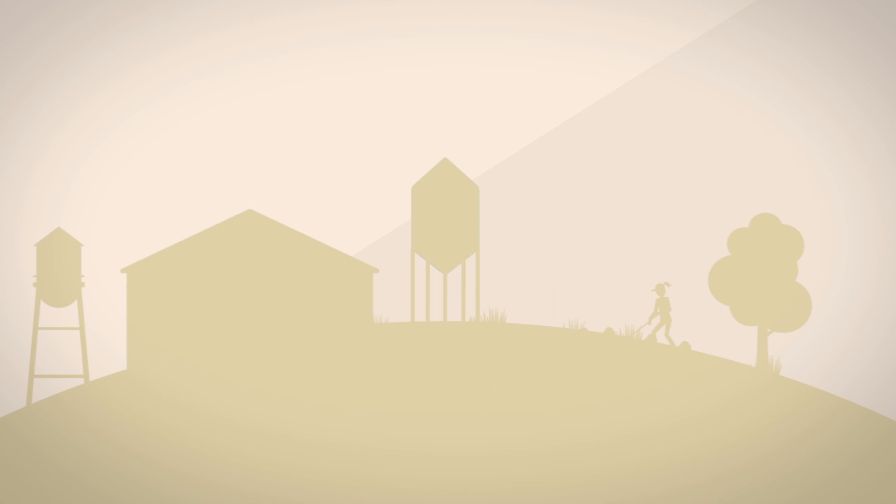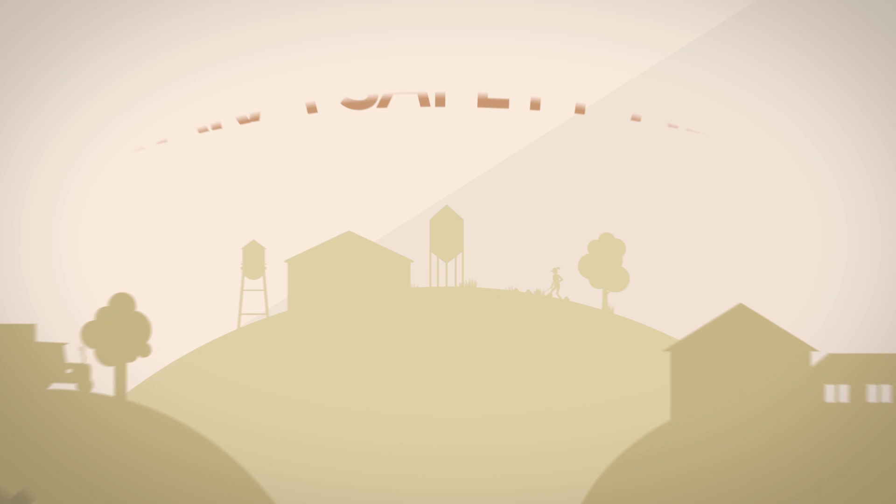Many of the programs in the Farm Bill are designed to help farmers deal with price swings or natural disasters. These are known as the Farm Safety Net and are vital for family farmers so they can continue to support their communities, protect the land, and provide food for our nation.